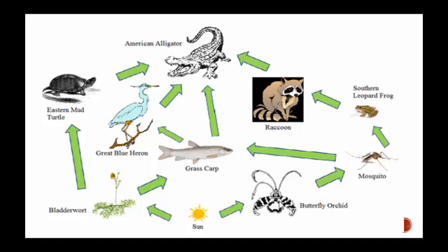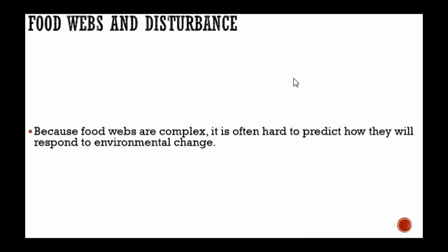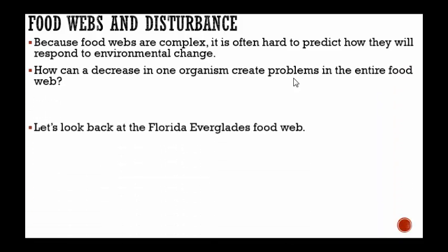Let's say the butterfly orchid disappears. Now the mosquito has nothing to feed off of — like the butterfly orchid, it's going to die out. The southern leopard frog has nothing to eat because the mosquitoes are gone. It dies out. The raccoon doesn't have any southern leopard frogs to eat, which then affects the American alligator because there are no raccoons left. So, even when we look at one organism, it can really mess up an entire food web.